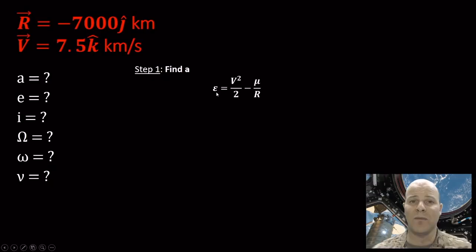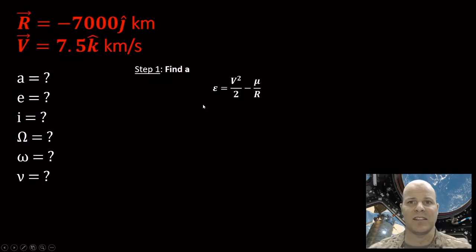To find semi-major axis, we look at our specific mechanical energy. If you recall, specific mechanical energy equals V²/2 minus μ/R, and this is constant for our orbit — if we know it at one place, we know it everywhere. So we're going to use this expression to solve for our semi-major axis.